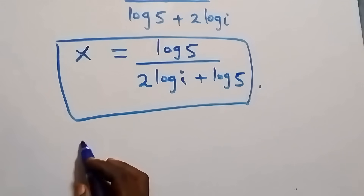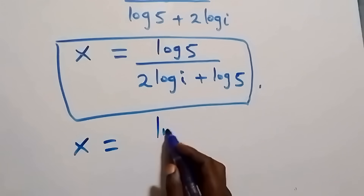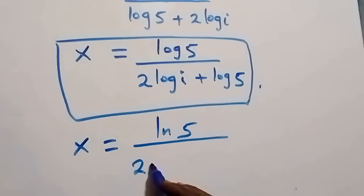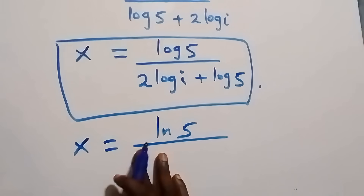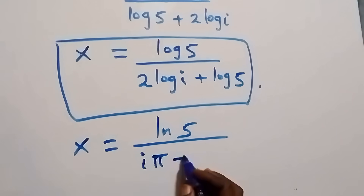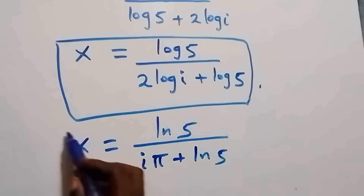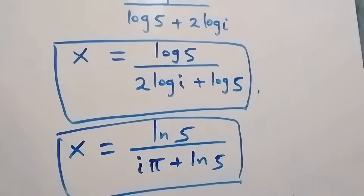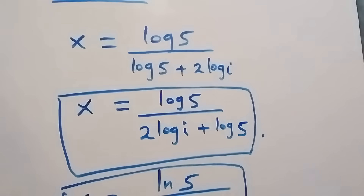Comparing both solutions: from natural log we have x equals ln five over (i pi plus ln five), and from common log we have x equals log five over (2 log i plus log five). Thank you for watching. Don't forget to subscribe for more videos, put your comments, share this video, and see you next class. Bye for now.